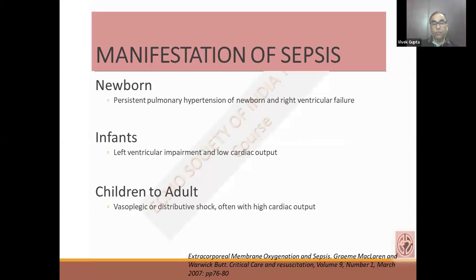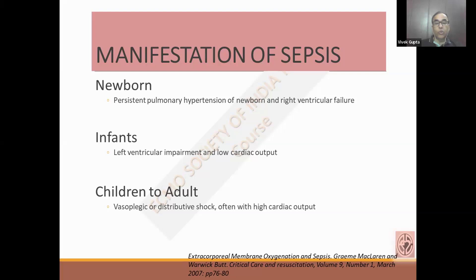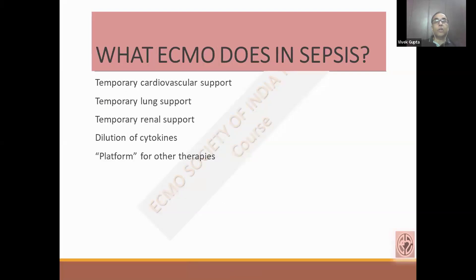In different age groups, there are different manifestations. In a newborn, persistent pulmonary hypertension — which is right heart failure — can be an initial sign of sepsis, while left ventricular function is impaired and there is low cardiac output. In older children and adults, the initial phase shows vasoplegia and distributive shock with high output, and once the shock progresses there will be low cardiac performance.